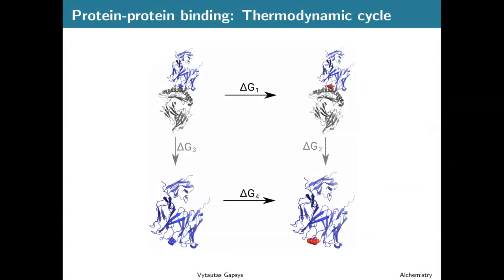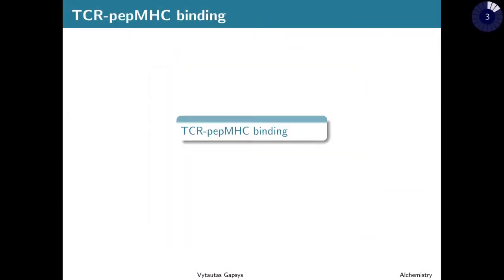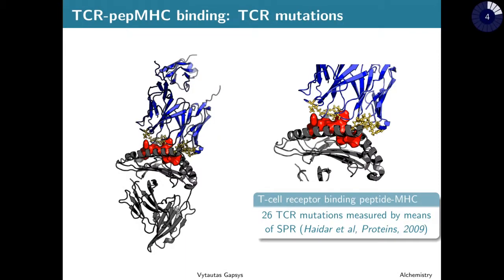This complex of blue and gray proteins is exactly the application I would like to talk about. For this short talk I have selected two applications to showcase. The first one is TCR — the T cell receptor — interacting with the major histocompatibility complex bound to a peptide, the pep-MHC complex.